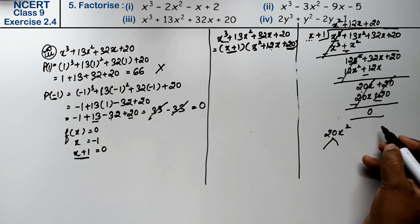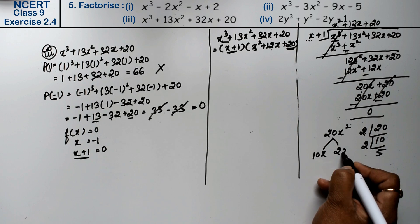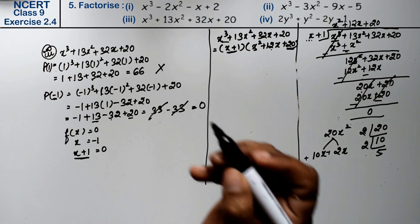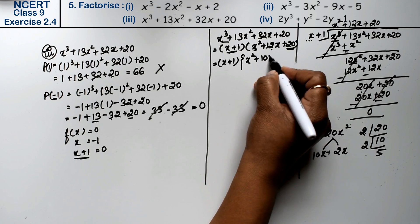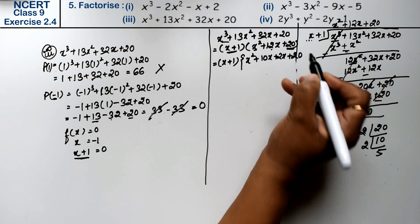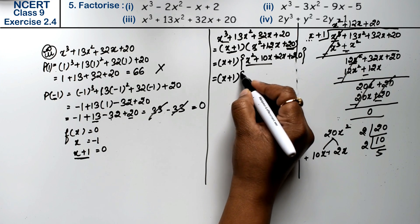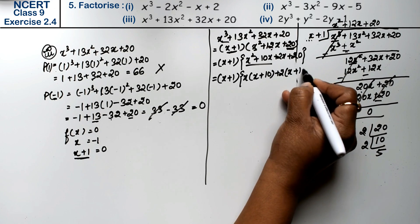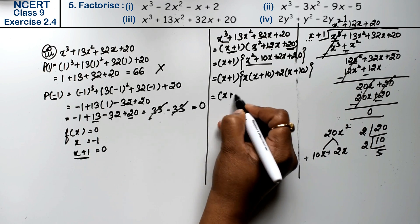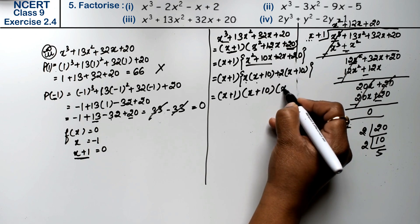Finally 20x plus 20 divided by x plus 1 gives 20, which cancels to zero. So the quotient is x squared plus 12x plus 20. Now we factor x squared plus 12x plus 20 by finding two numbers whose product is 20 and sum is 12, which are 10 and 2. So x squared plus 12x plus 20 equals x plus 10 times x plus 2. Therefore the complete factorization is x plus 1 times x plus 2 times x plus 10, which is the answer.